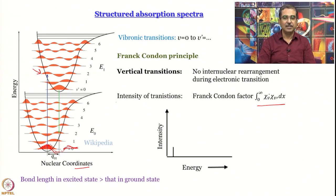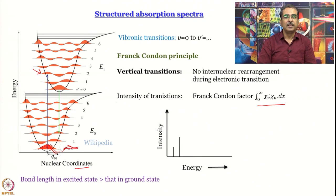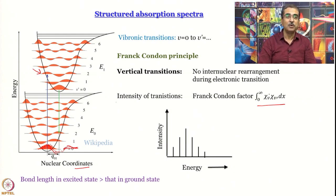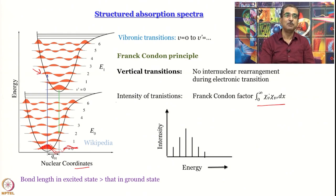Plotting against energy — not wavelength — let us say the 0–0-dash transition has some intensity. The next one, the 0–1-dash transition, will actually have a little more because the Franck-Condon factor is greater. For 0–2-dash it will be maximum, for 0–3-dash it will fall again, and it will keep decreasing, going through a maximum.